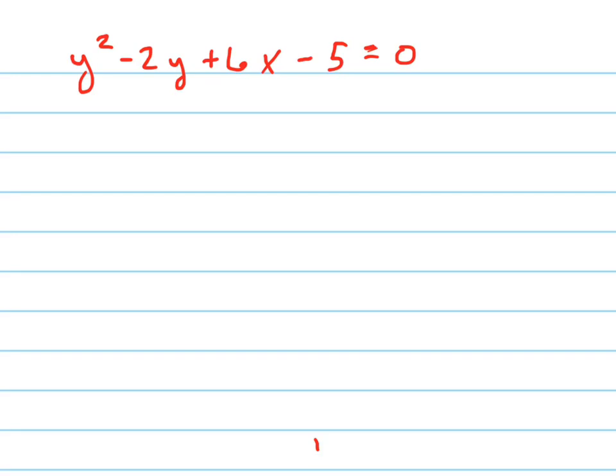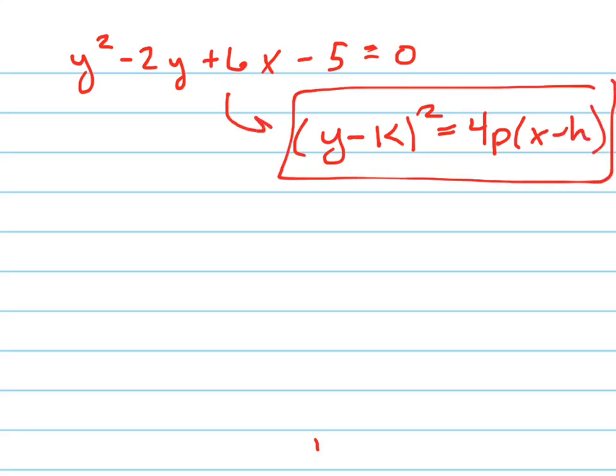So, standard form, if we harken back to this in our book, notice that the y is being squared, so standard form is going to be y minus k squared equals 4p times x minus h. That's standard form. I'm trying to put this equation into that form, so I've got to complete the square.